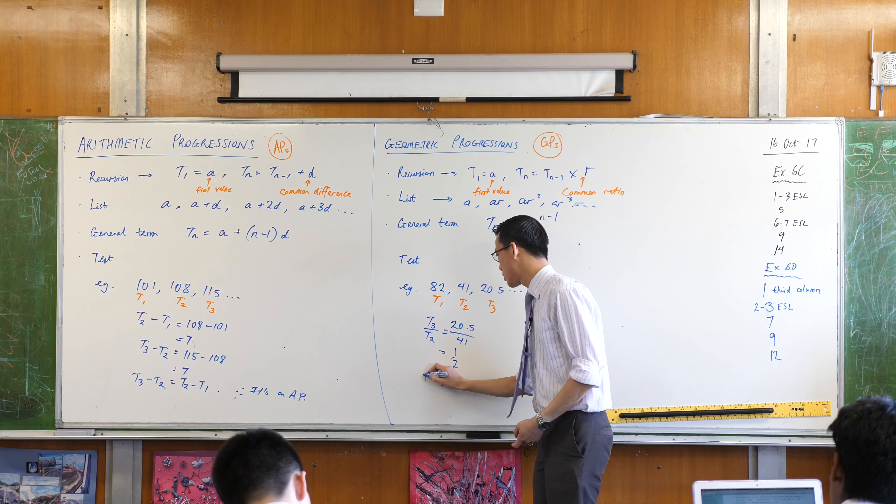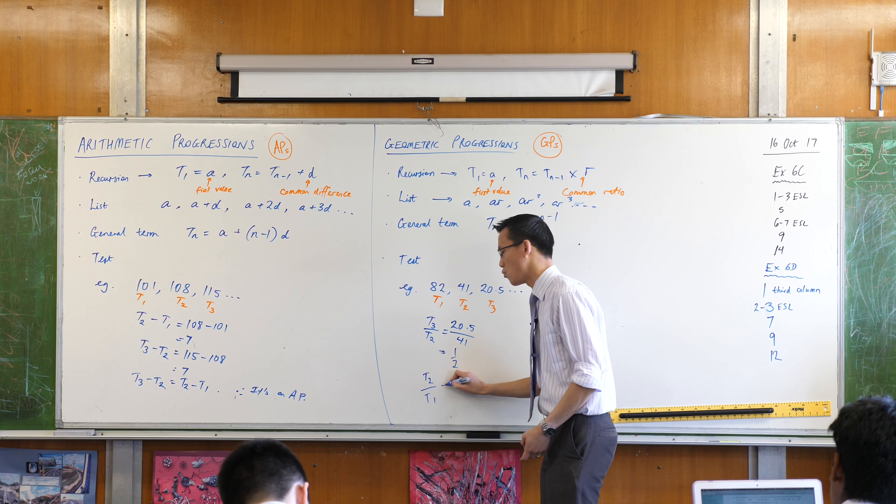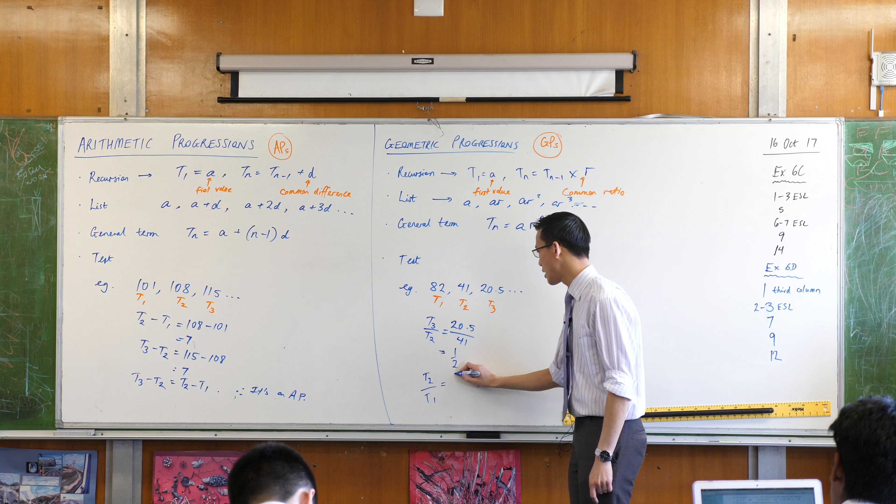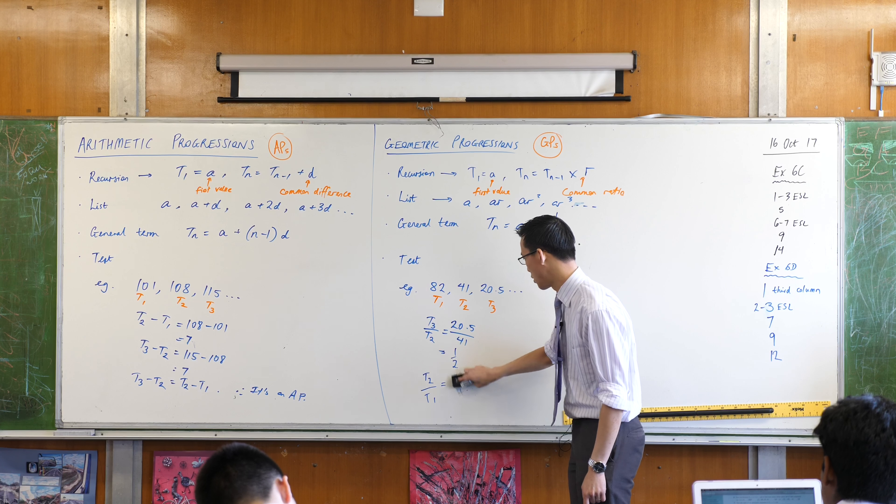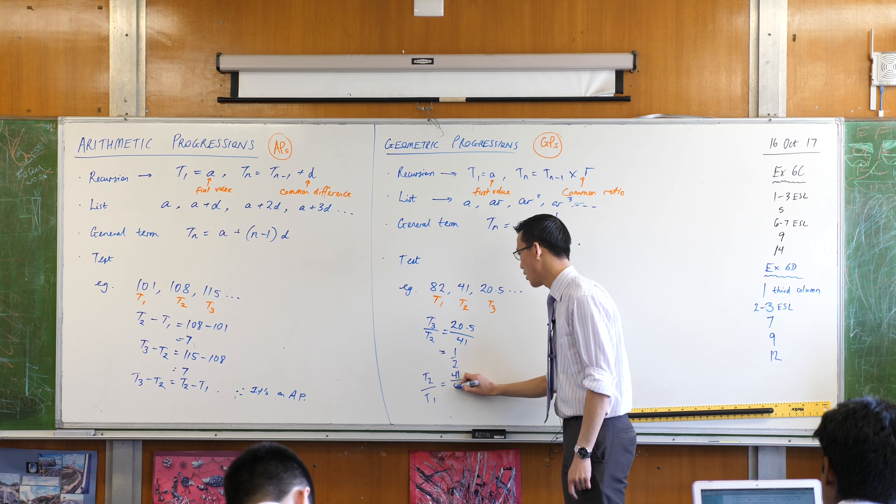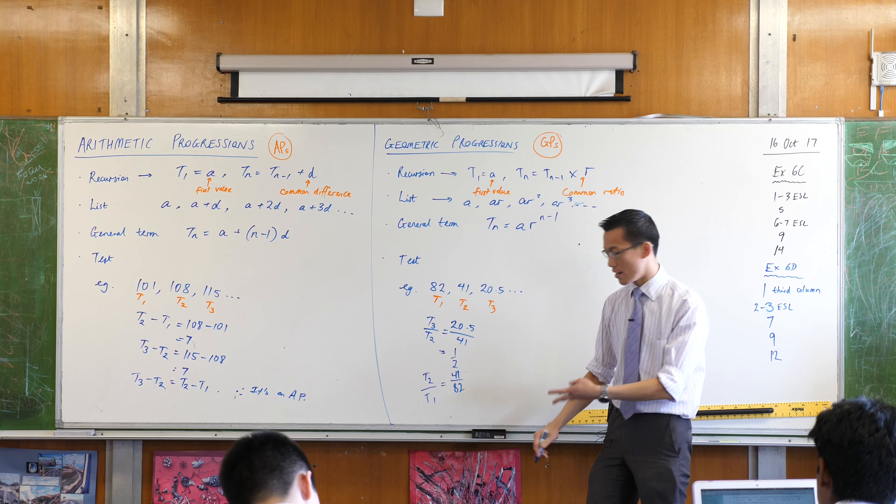So it's in my interest to express this ratio as simply as I possibly can. Now I just check the other one, term two divided by term one, which is 82 on 40, sorry wrong way around, 41 on 82, order is important, which again is a half.